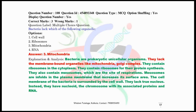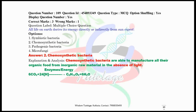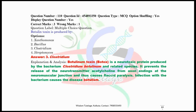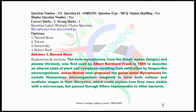As we all know, respiration in bacteria, in the absence of mitochondria, is performed in the cell membrane. All life on Earth derives its energy directly or indirectly from the sun, except in the case of chemosynthetic bacteria — the chemical reaction performed by these bacteria is shown here. Question number 110: Botulin toxin is produced by Clostridium botulinum.